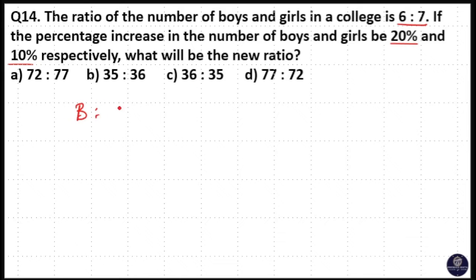So the ratio of boys and girls is 6 to 7. The percentage increase of boys and girls is 20 and 10, so 20% for boys and 10% for girls.